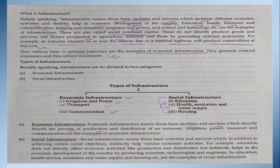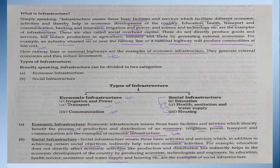Economic infrastructure directly facilitates or benefits the process of production and distribution. Irrigation, power, transport, and communication services directly help various economic activities. Social infrastructure like education does not directly affect production or distribution but indirectly helps economic development by producing scientists, technologists, engineers, etc. Education, health services, sanitation, water supply, and housing are examples of social infrastructure. Economic infrastructure directly influences the economy through irrigation, transport, and communication.